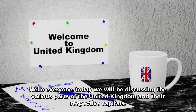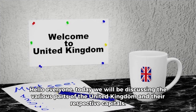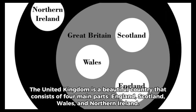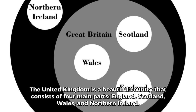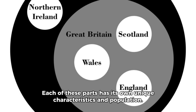Hello everyone! Today we will be discussing the various parts of the United Kingdom and their respective capitals. The United Kingdom is a beautiful country that consists of four main parts: England, Scotland, Wales, and Northern Ireland. Each of these parts has its own unique characteristics and population.